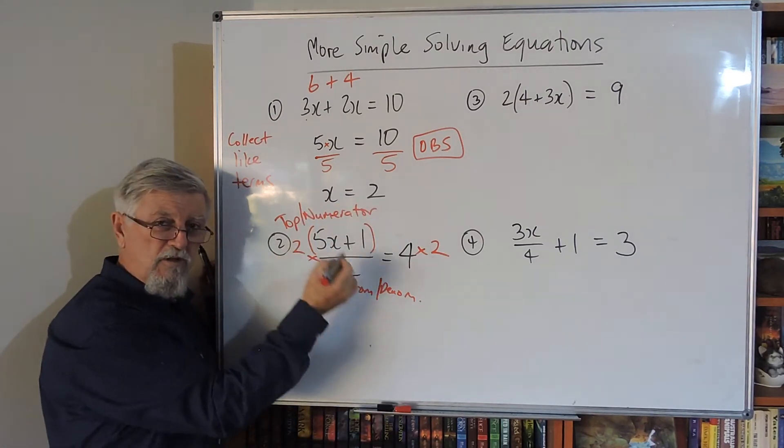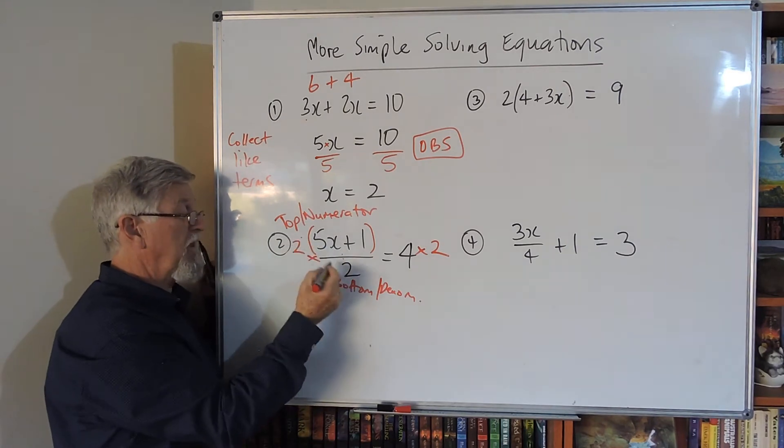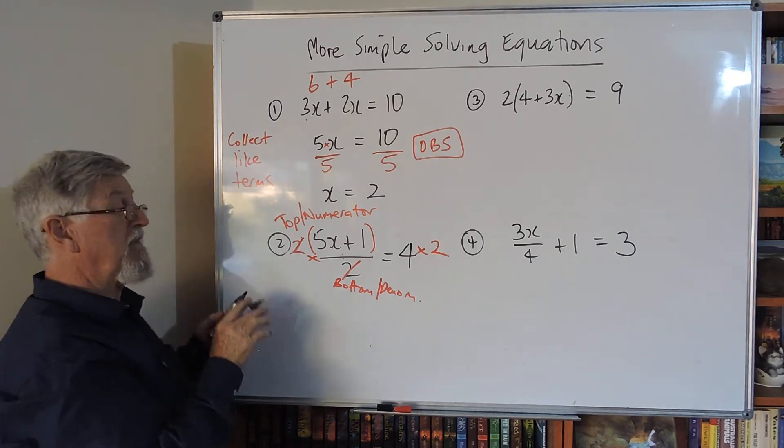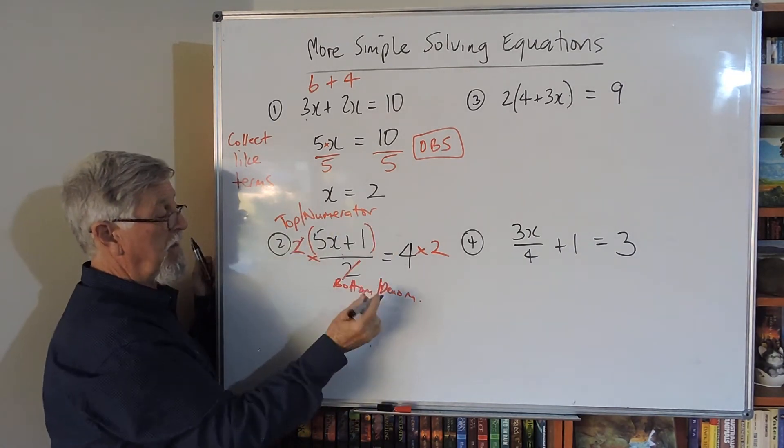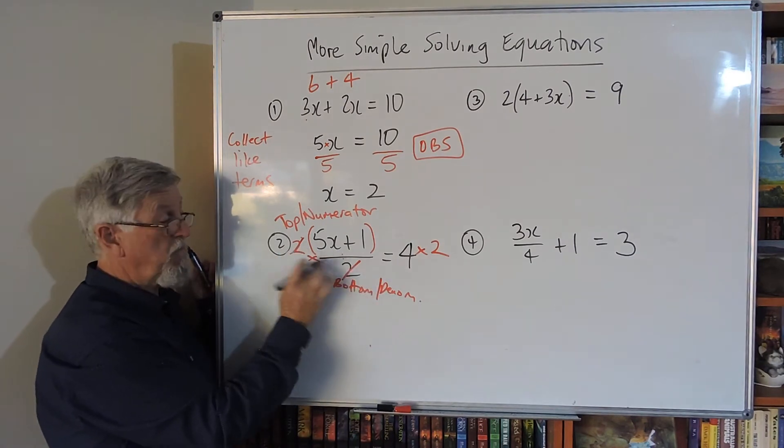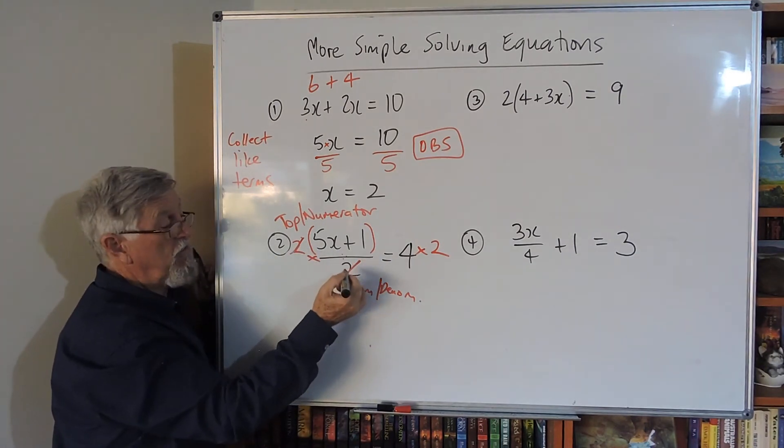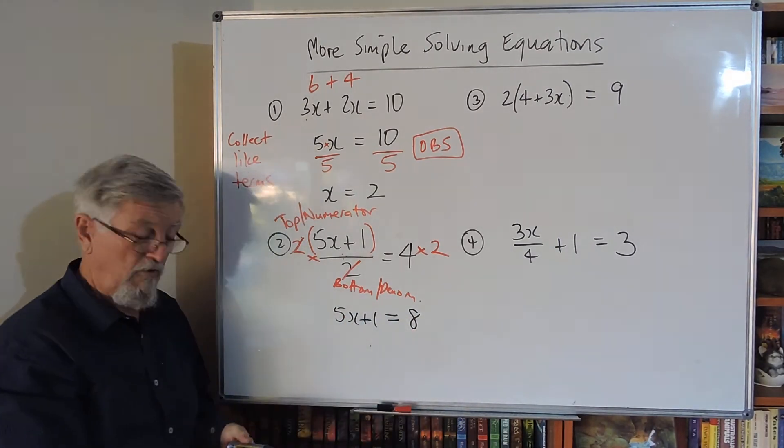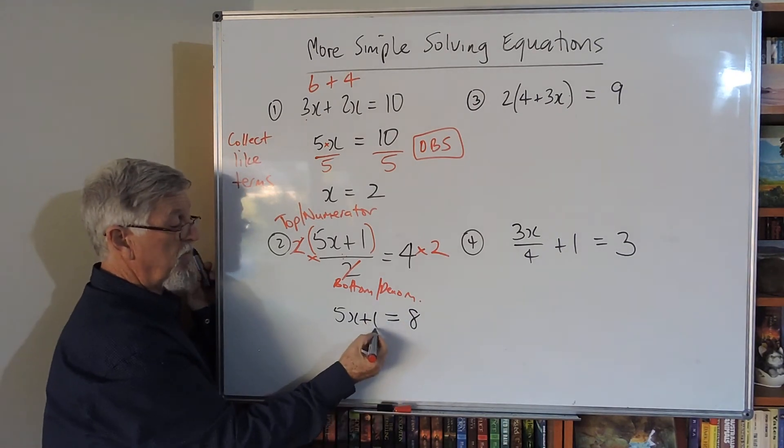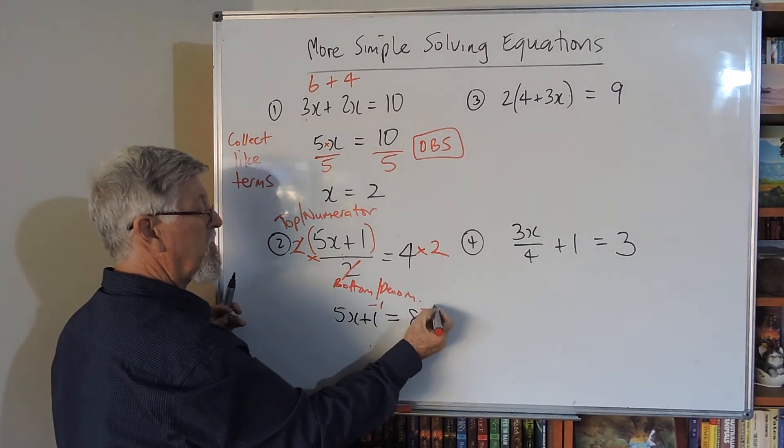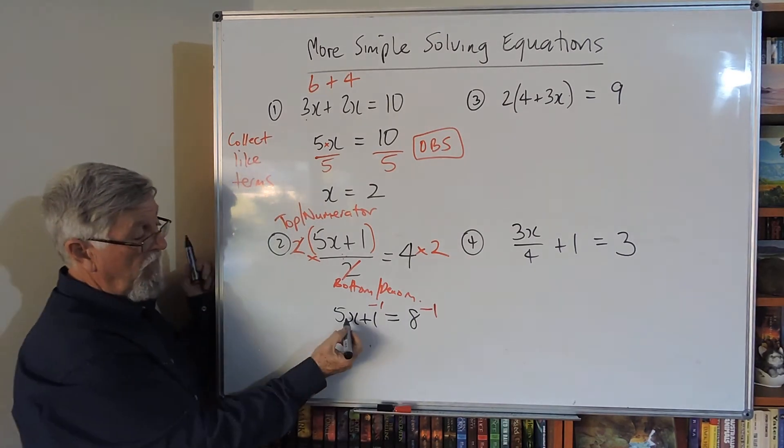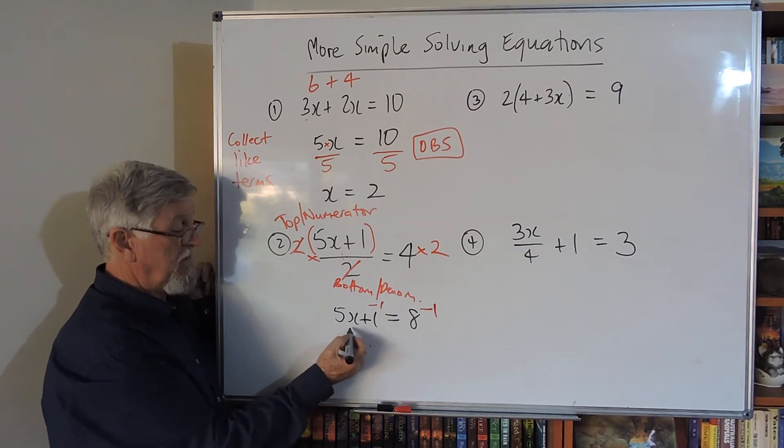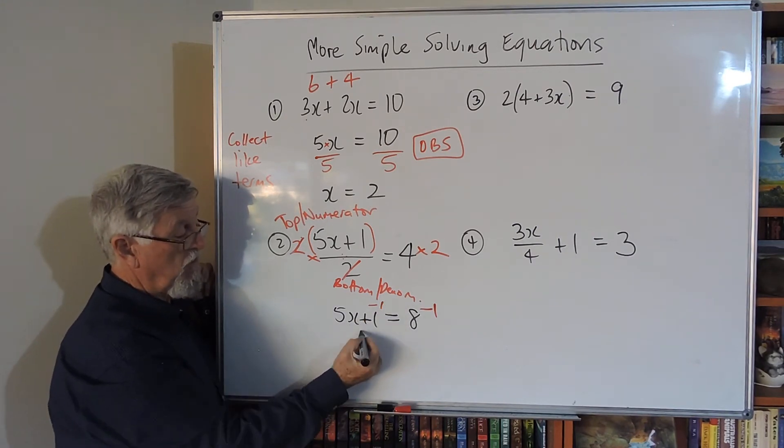Two into two goes once, I don't have to write the one. If I didn't have that bracket written there, they just disappear. The purpose is to get rid of that divide by two on the bottom. Now I've got 5x + 1 = 8. The plus one becomes minus one, minus one on both sides.